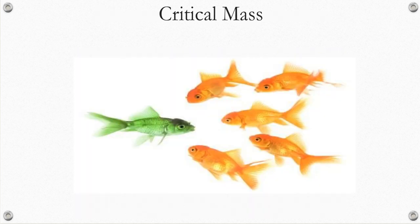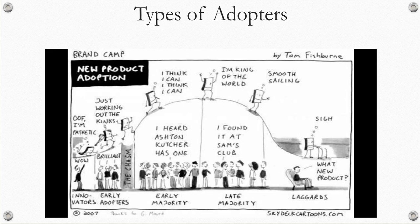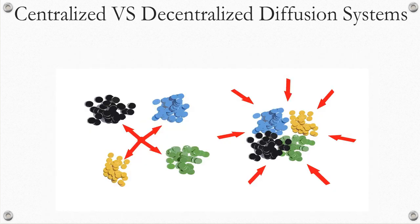Rogers suggested that for an innovation to be diffused successfully, it has to reach critical mass — adopted by enough people to make the innovation sustainable. This cartoon shows the progress of the adoption of an innovation. Innovators are usually excited about the new innovation, as are the early adopters. If the innovation makes it across the adoption chasm to the early majority, then the chances of its survival increase considerably. It is an uphill battle for the innovation to reach critical mass. Both diffusion systems — centralized and decentralized — have a valuable input in the diffusion process.